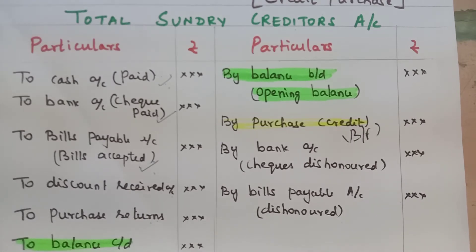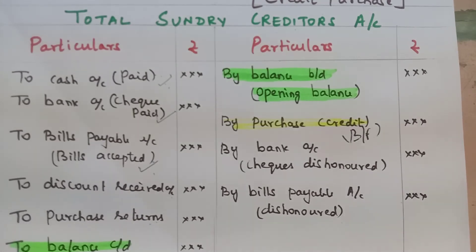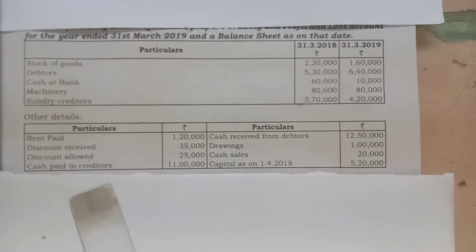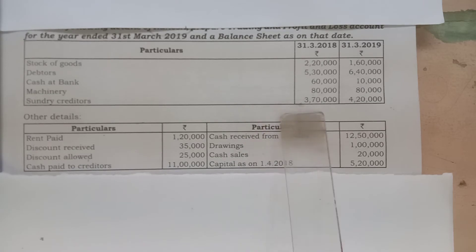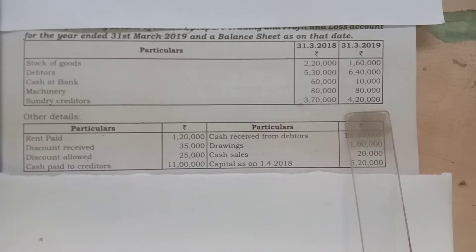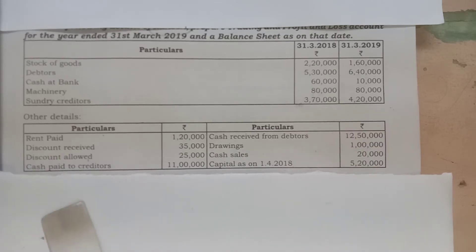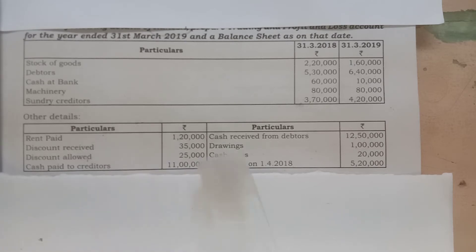This is the format of the creditors account for credit purchase. In this example, we will get the total creditors information. Discount received and cash paid to creditors: opening balance is on the credit side, closing balance is on the debit side. Discount received is debit side, cash paid is debit side. The balancing figure is credit purchase.